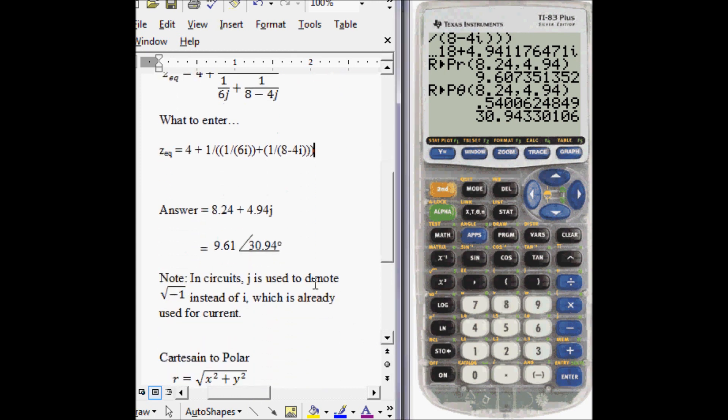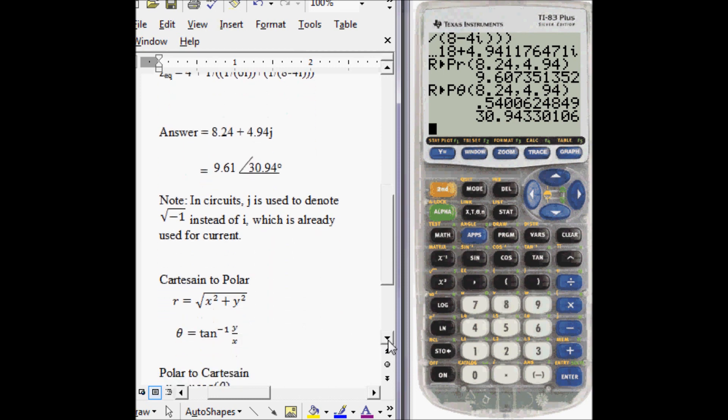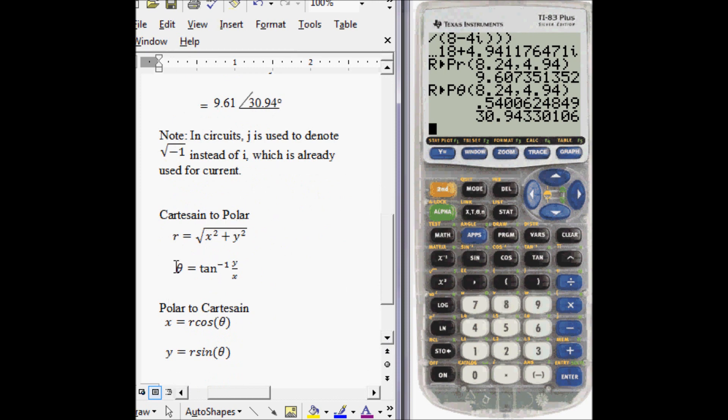And as a side note, just about current, J and I, right here. You can pause the video if you want to read that. And these are the equations that your calculator uses to switch between polar and Cartesian coordinates. Thanks for watching.